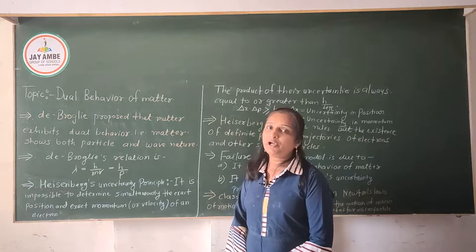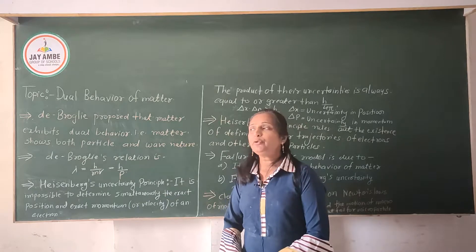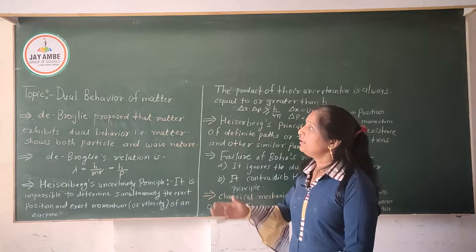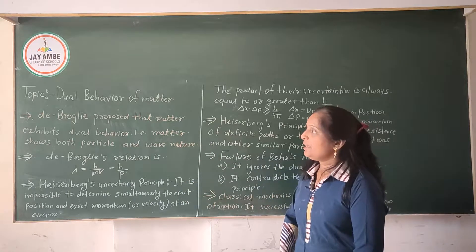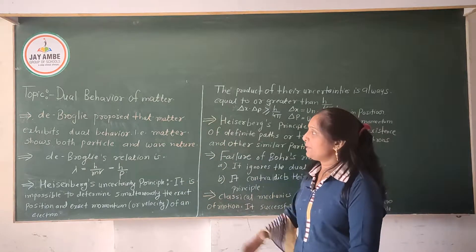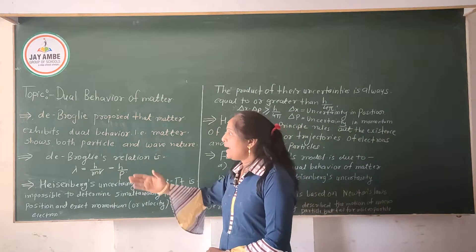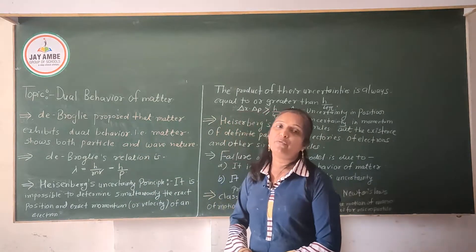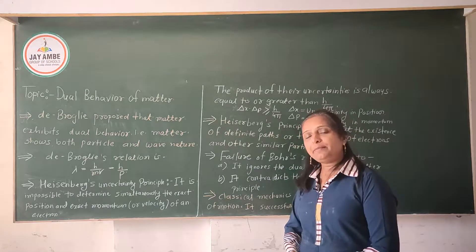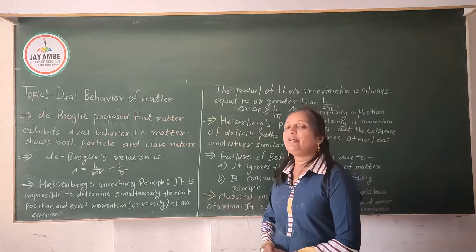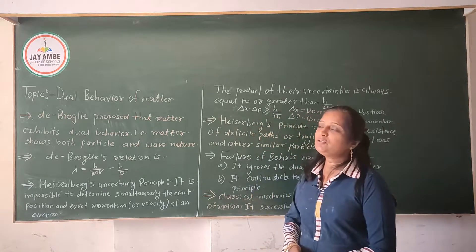After the course on the Bohr model of hydrogen atoms and its limitations, I would like to explain the dual behavior of matter. De Broglie, this scientist proposed that matter exhibits dual behavior — meaning matter shows both particle nature and wave nature. According to de Broglie, matter has both types of nature: it exhibits as a wave and also as a particle.